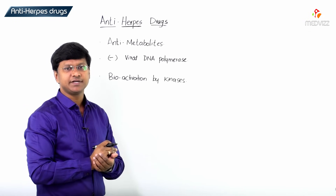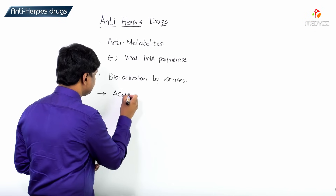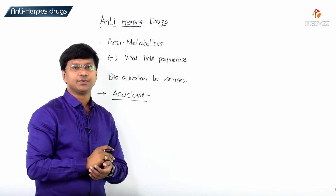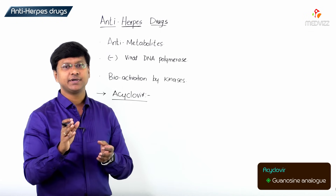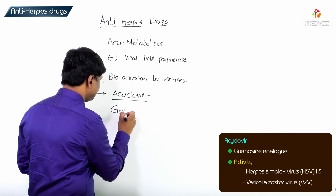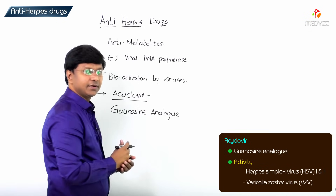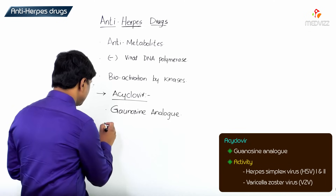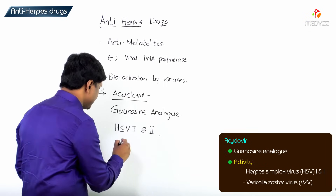Among these anti-herpes drugs, let me discuss a very important drug: acyclovir and its congeners. Acyclovir is a guanosine analog which is active against herpes simplex virus and also active against varicella zoster virus. So it is active against HSV1, HSV2, and varicella zoster virus.